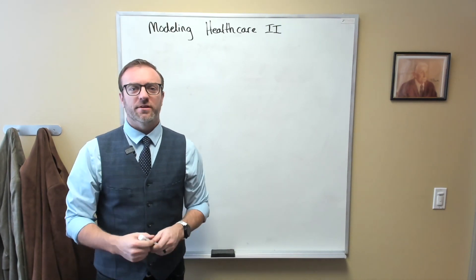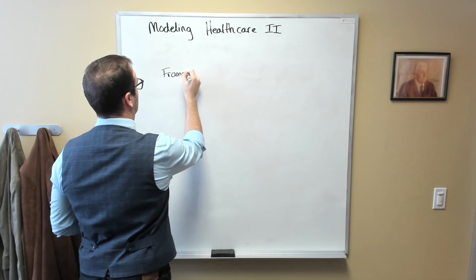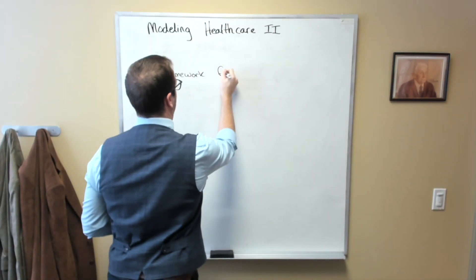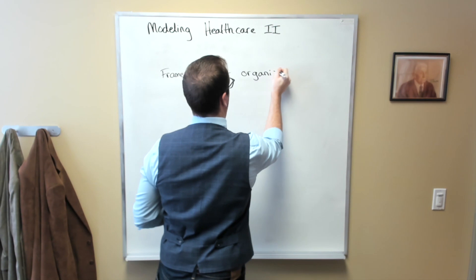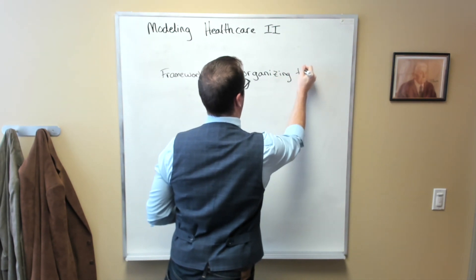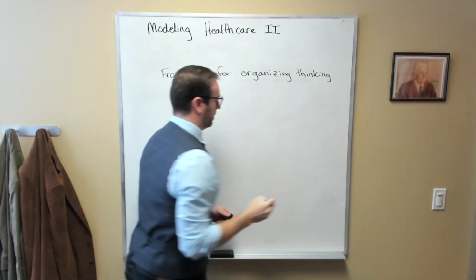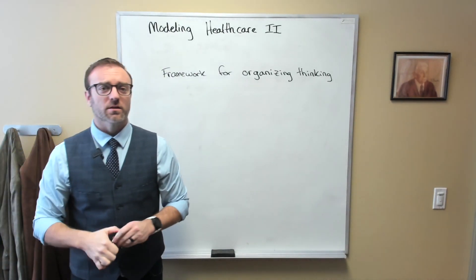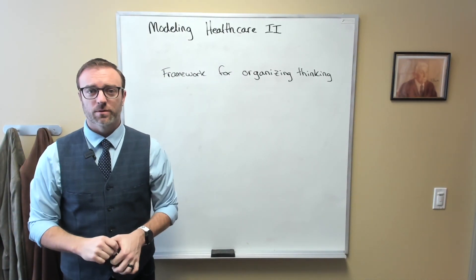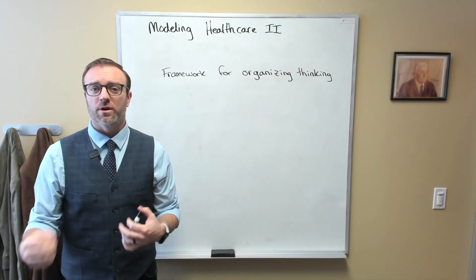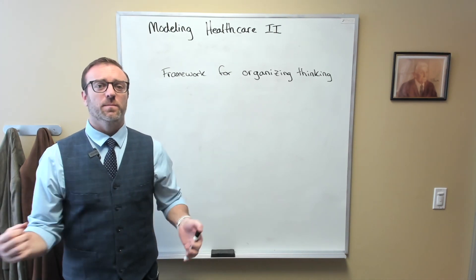Let's talk about modeling in general. What a model is, is a framework for organizing our thinking. A model allows us to take abstract facts about the world and put them together in a coherent way, such that we can analyze and make predictions.